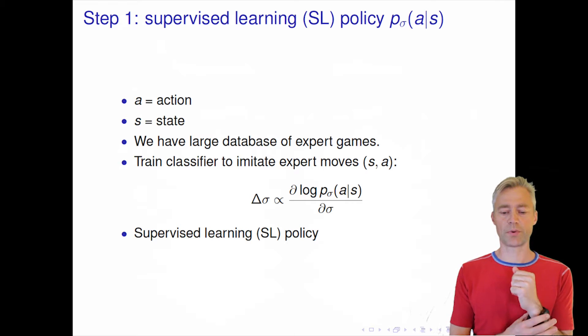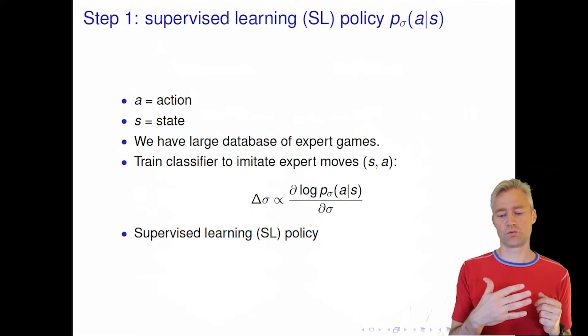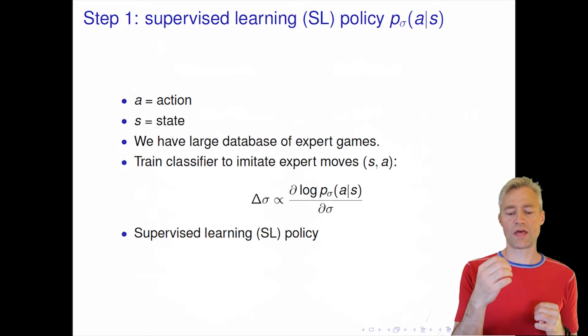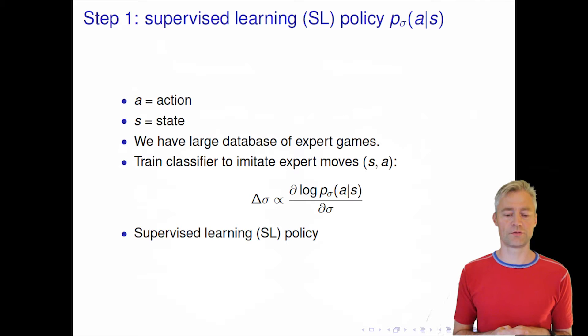Now we train a classifier to imitate the experts. We do that by having a network that has as input the board position and as output gives the softmax probability for the different actions. We want the network to put a high probability for the moves that the experts actually played. We call this the supervised learning policy. This probability of an action given a state is a policy model.